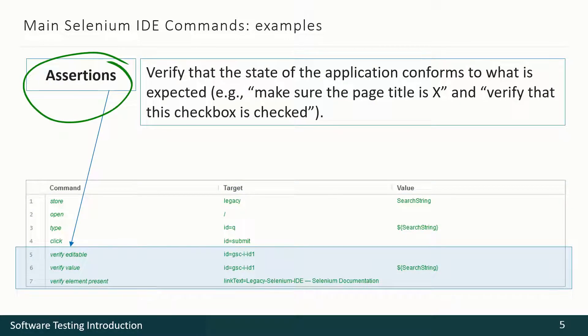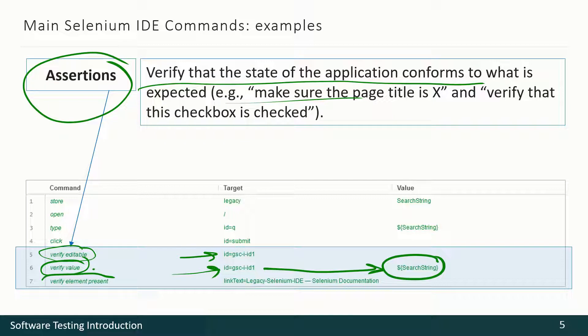Assertions allow us to verify the state of the application. For instance, here we see that we are verifying that the field is editable, we are verifying the value of the field, and we want this value to be this. We may verify that some element is present on the page using some locator.